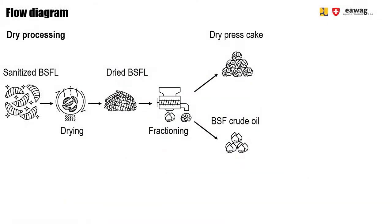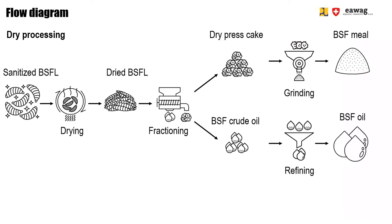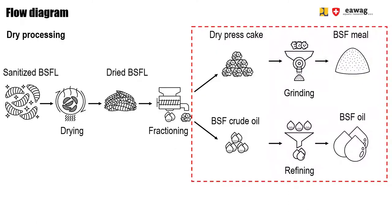As a quick reminder, here you see again the process flow diagram of fractioning dried BSF larvae into BSF Meal and BSF Oil. However, this module only focuses on the refining part — how to refine the dry press cake and BSF Crude Oil.